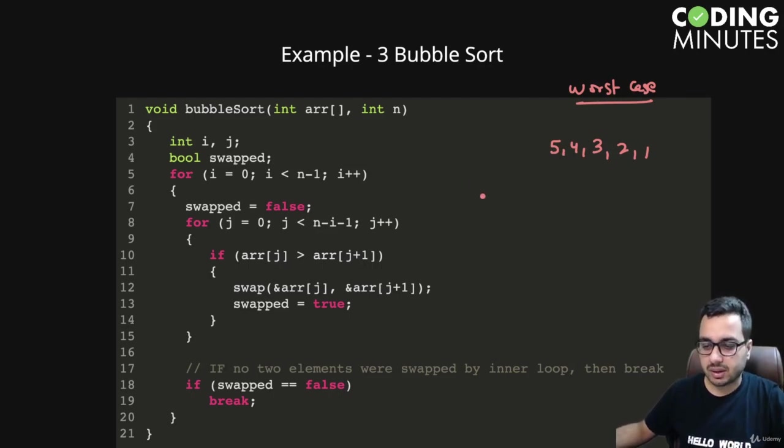When i is zero, j is going to run n minus 1 times. When i is one, it runs n minus 2 times. When i equals n minus 2, it still runs one or two times.